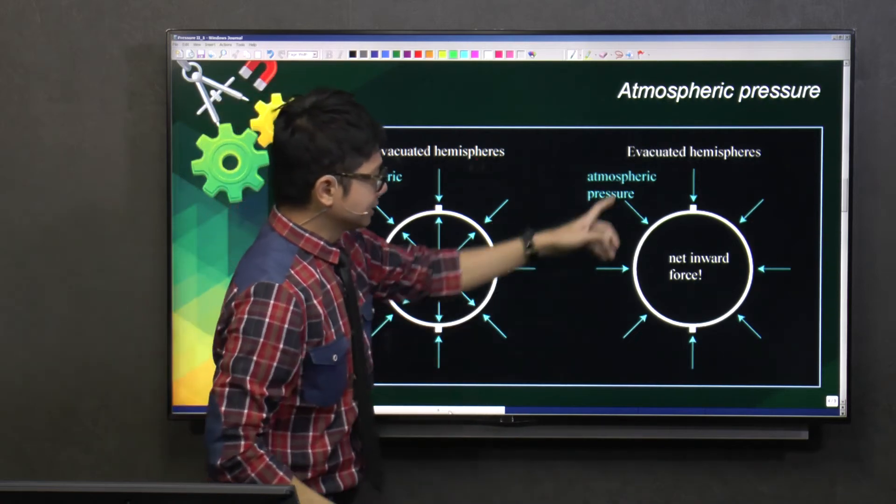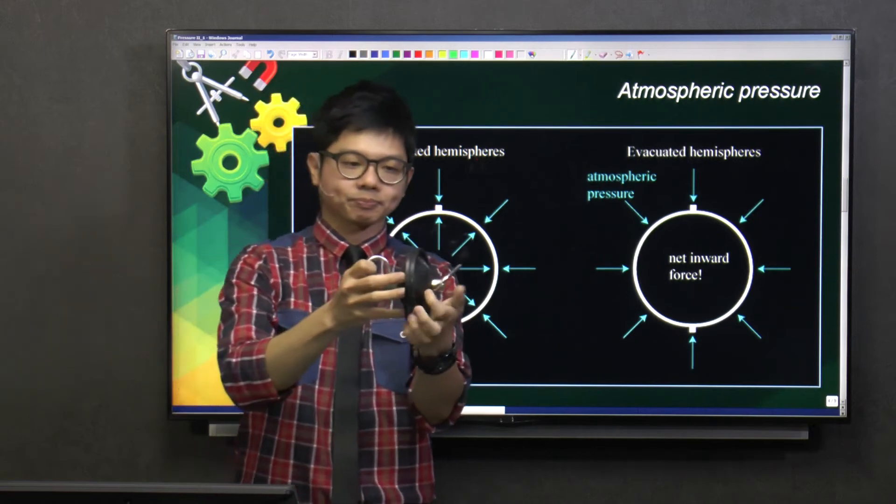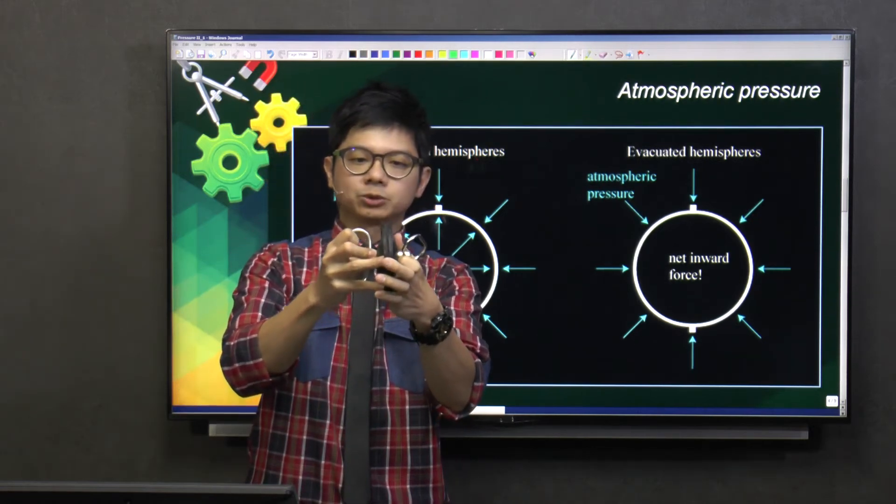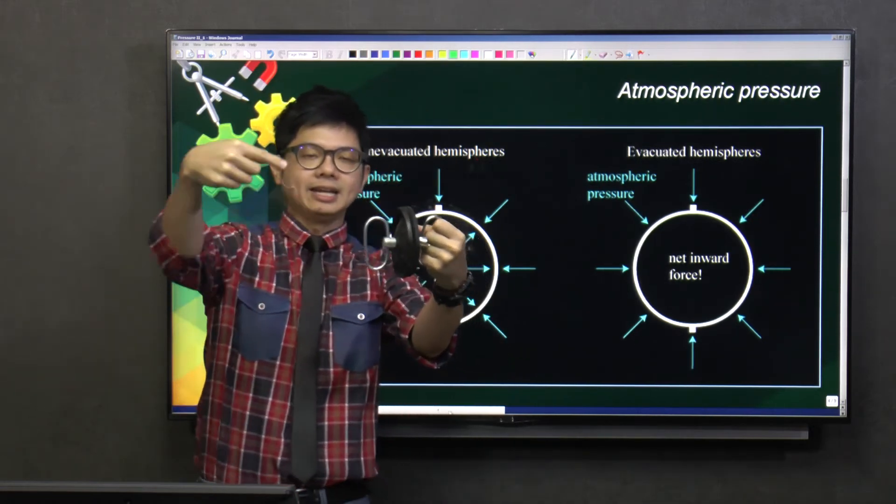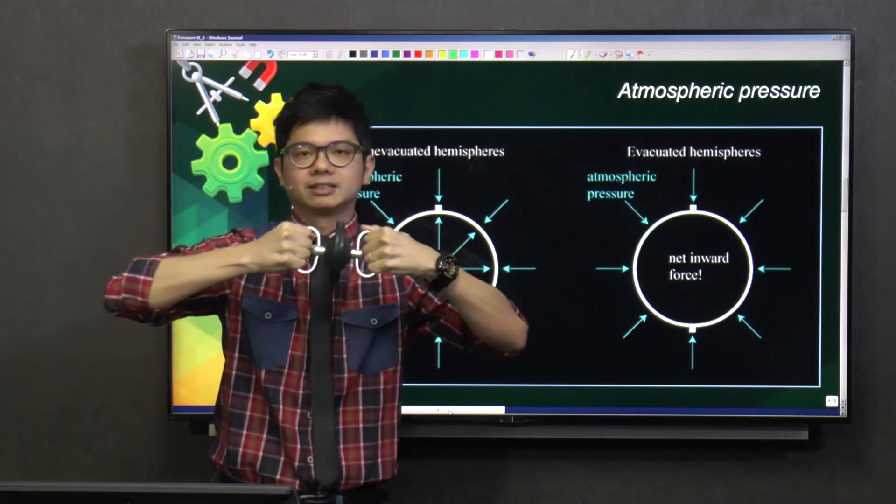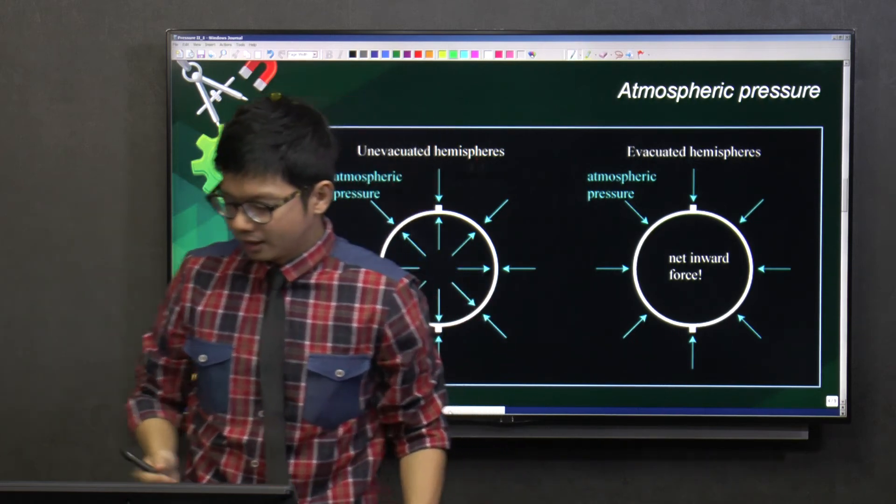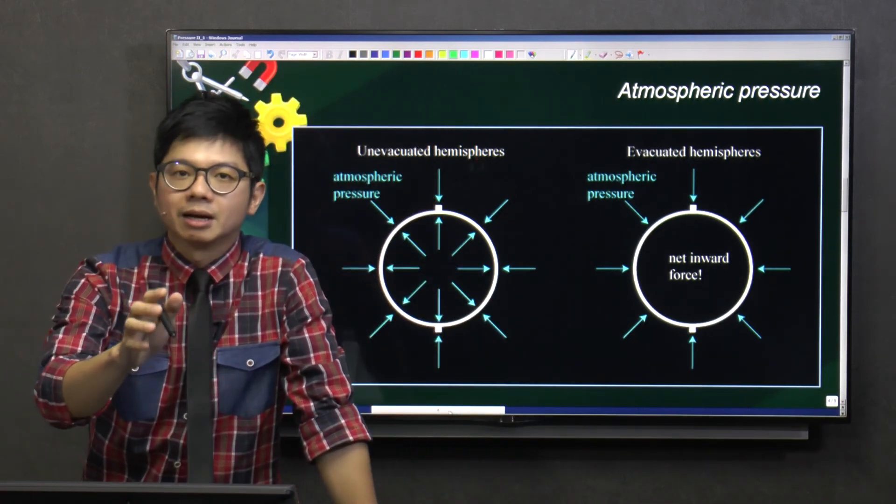But when it is evacuated, it means that the air is being squeezed out. So when the air is being squeezed out, there is an inward force clamping these two hemispheres together. You'll find that it's very difficult to open it. So this is how the Magdeburg hemisphere works.